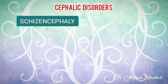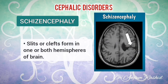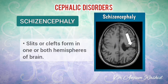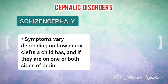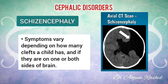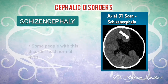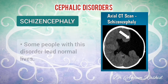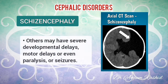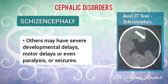The next type of cephalic disorder is schizencephaly. This rare disorder happens when slits or clefts form in one or both hemispheres of the brain. Symptoms will vary depending on how many clefts a child has and if they are on one or both sides of the brain. Some people with this disorder lead relatively normal lives. Others may have severe developmental delays, motor delays, or even paralysis or seizures.